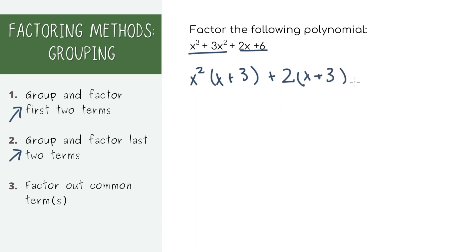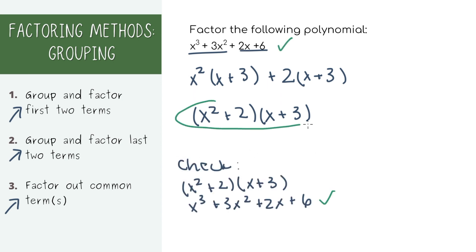So now you'll notice that in both of our groupings, we ended up with an x plus 3 in both. In the same way, you can actually pull out the x plus 3 as a factor and we'll get x squared plus 2 times x plus 3. That is our answer.